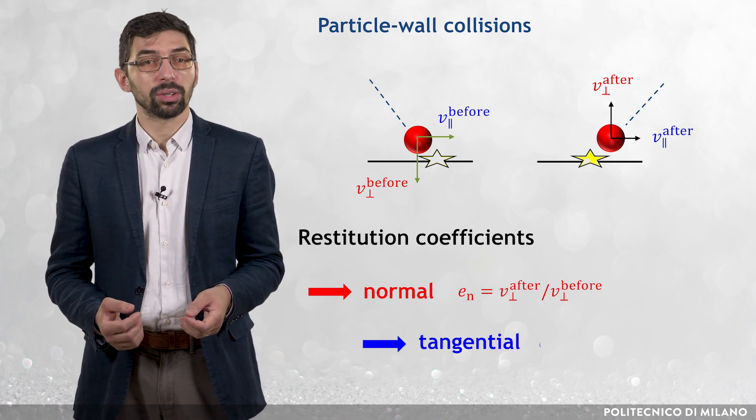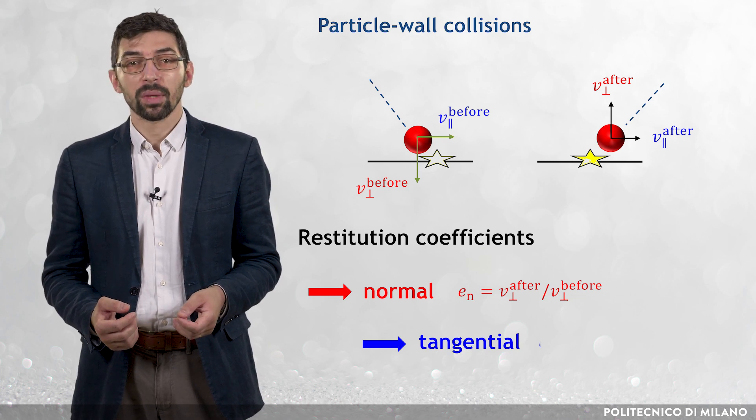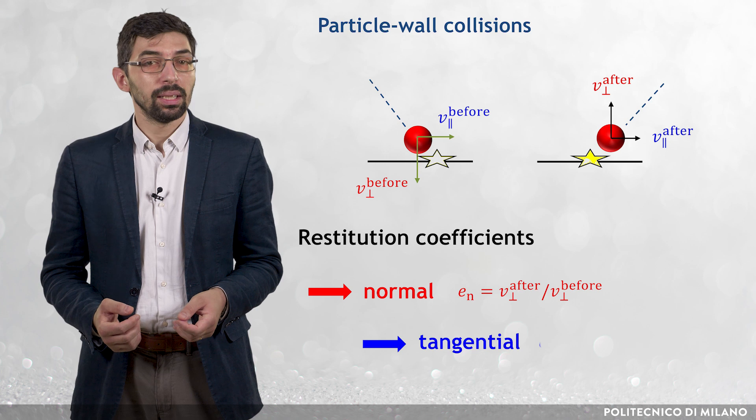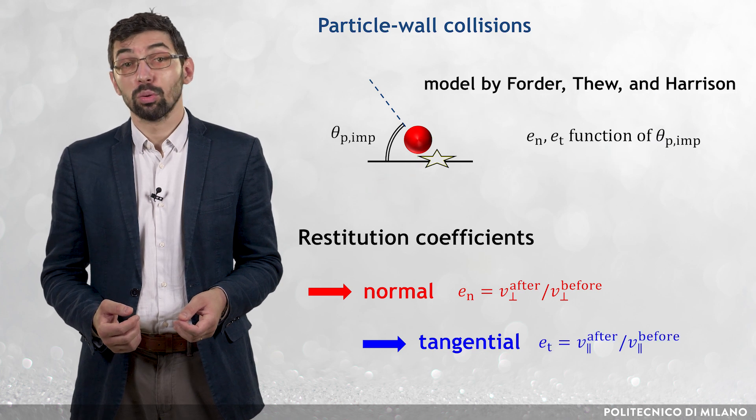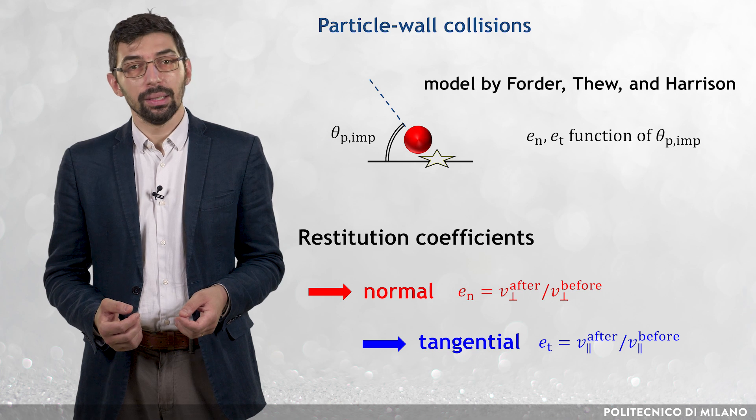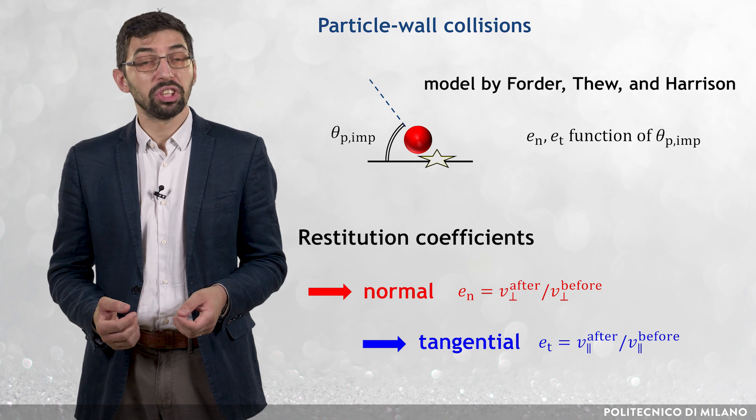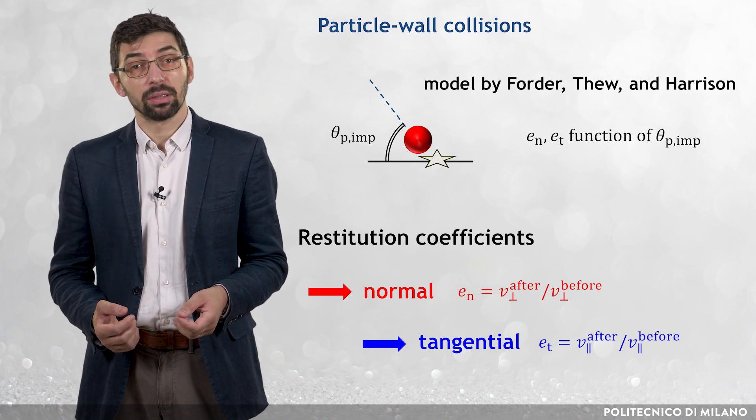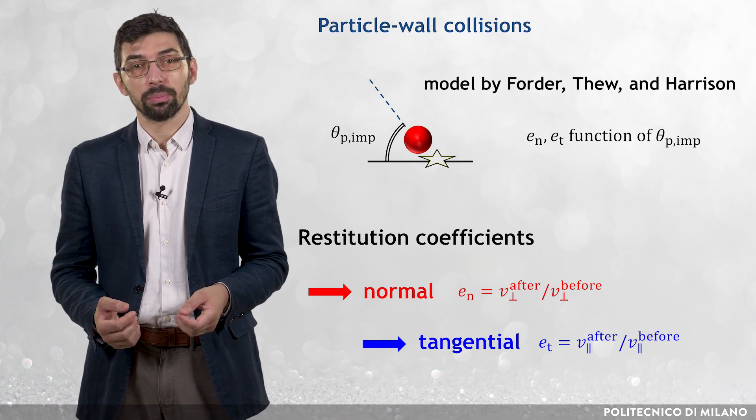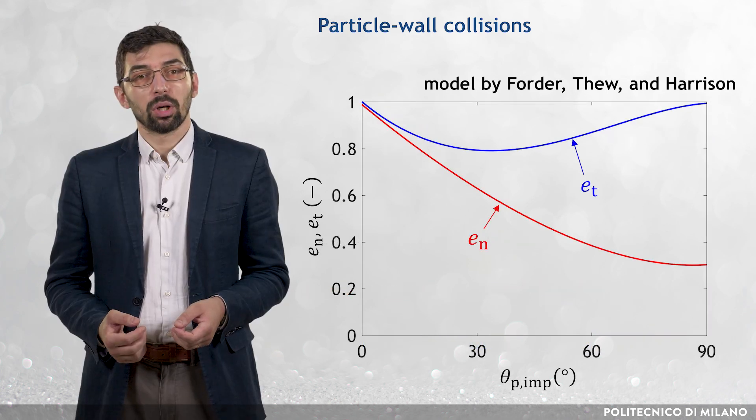A number of models have been proposed to estimate the restitution coefficients. One of the most widely used is that of Forder and co-workers, which relates En and Et to the particle impact angle, referred to as θp-imp, which is the angle formed by the particle velocity at the stage of impingement and the surface.